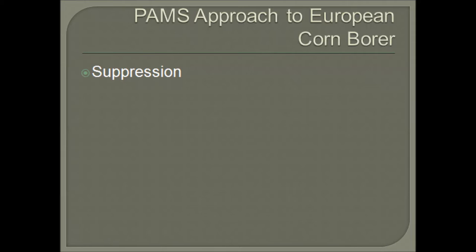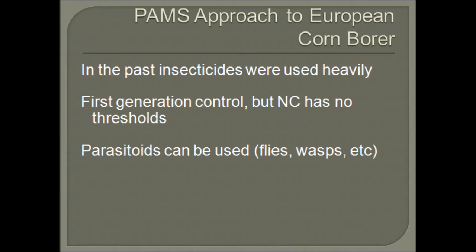Suppressing the European corn borer is a whole other set of problems. In the past, insecticides were heavily used, but only about first generation control is available for the European corn borer. North Carolina has no set threshold for the European corn borer, which poses a new set of issues. There are some parasitoids that can be used, including several parasitoid wasps and flies, as well as ladybird beetles and predacious mites. These biological controls offer good regulation of the corn borer, and when used with other methods such as stubble and stalk destruction and Bt corn varieties, you can get fairly good management of the European corn borer.